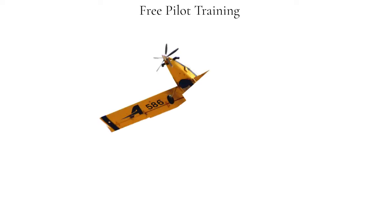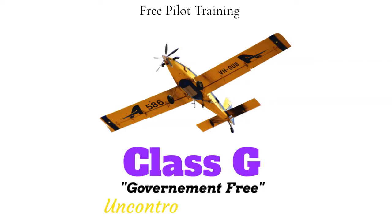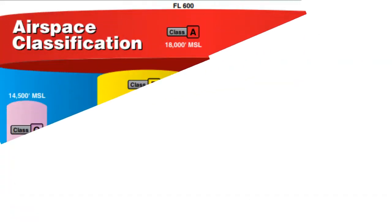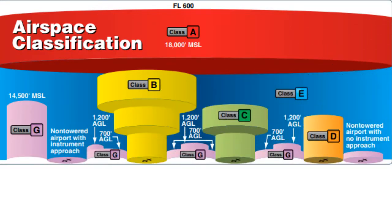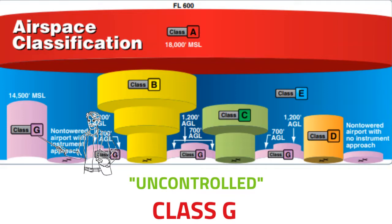Thanks for joining me on the free pilot training channel. Today we're going to be talking about Class Golf, which is uncontrolled airspace. Now we've already discussed in detail all the different types of controlled airspace you need to be aware of to get your private pilot's license, but you also need to be familiar with the details of uncontrolled airspace. Here in the United States, we call this Class Golf.